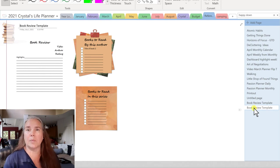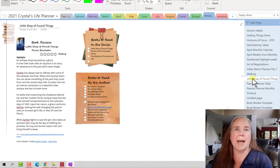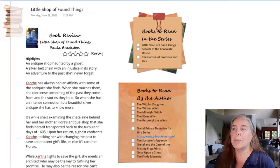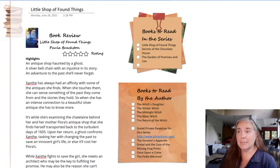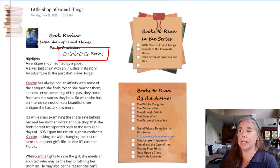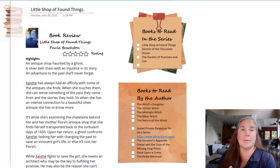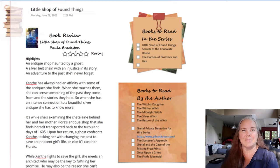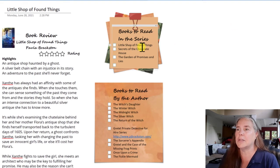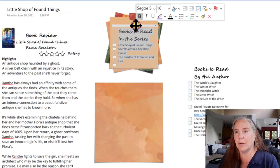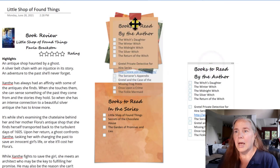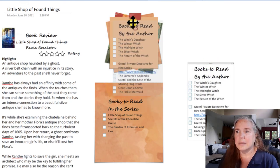I'm going to go away and fill in one of these so you can see what it looks like. I just read a great book by Paula Braxton called Little Shop of Found Things and I wanted to record that. Here I've given it a five-star rating — I think it was a great book. I chose different colored stars, and I want to go in with my Apple Pencil and color in the stars to match the book. You'll also notice I switched the books-to-read in the series and books written by the author — I simply grabbed those containers and swapped them around.